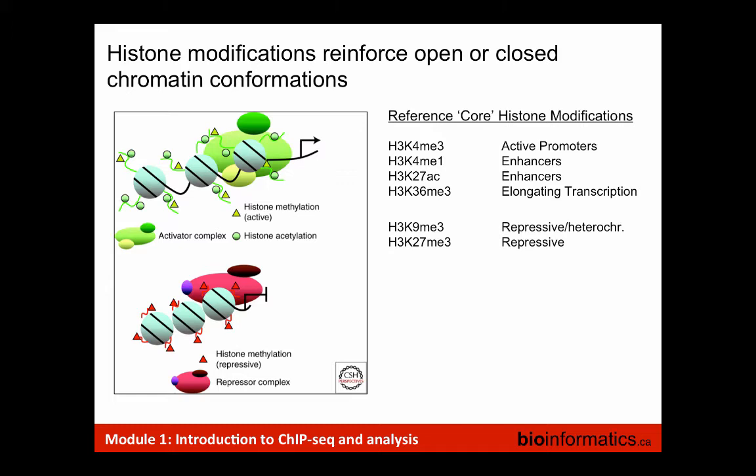In terms of the reference core marks, there are two sets: those that reinforce open or active chromatin — H3K4me3 at active promoters, H3K4me1 at enhancers, H3K27ac, and H3K36me3 associated with elongating transcription — and two marks associated with repressive chromatin: H3K9me3 and H3K27me3. We'll be talking more about the characteristics of these marks as we go through the lecture.